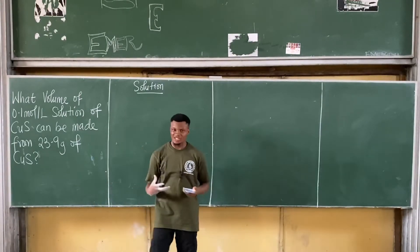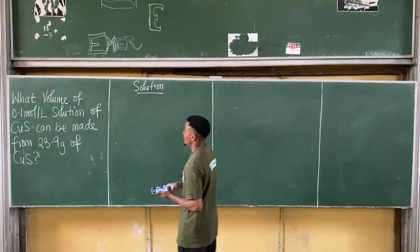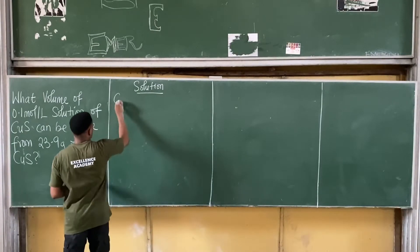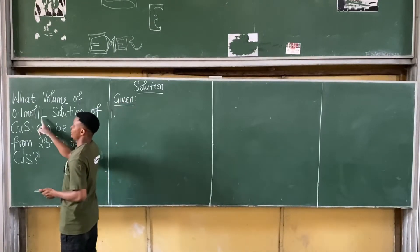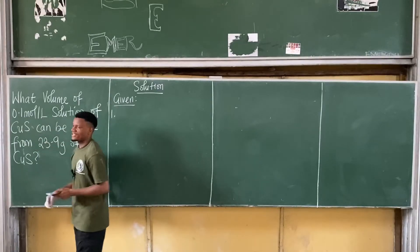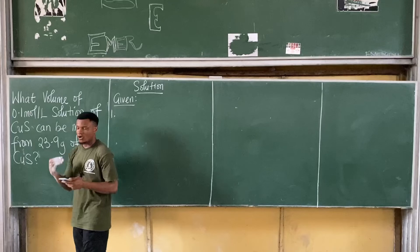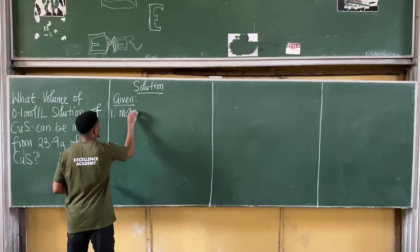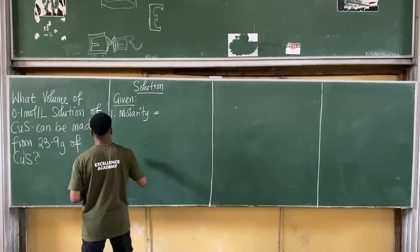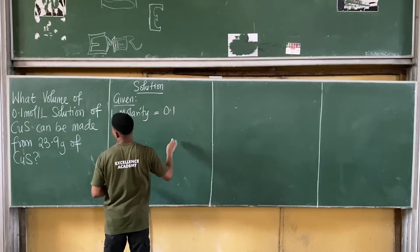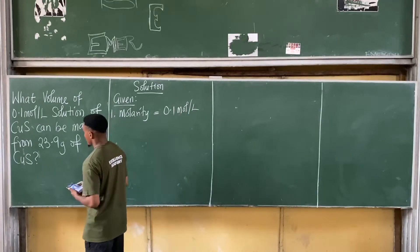Of course, volume will be measured in liter. So what am I giving here? Let's list out the parameters. First things first, I'm giving mole per liter. Mole per liter is the same thing as the molarity or the molar concentration. So I'm giving molarity. Molarity is equal to 0.1 mole per liter. That's the first thing there.